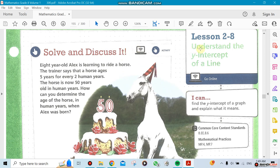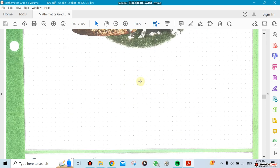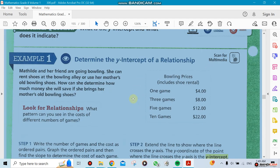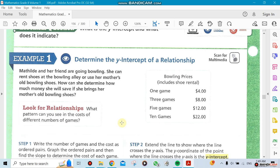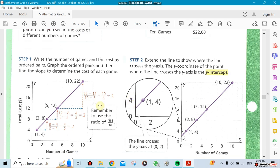Lesson 2.8: Understand the y-intercept of a line. So what makes a number a y-intercept? Look at this line here - you can see where it ends. To find the y-intercept, we need to extend the line a little bit so you can see where it crosses. We can do this in two different ways: either algebraically or by graphing.